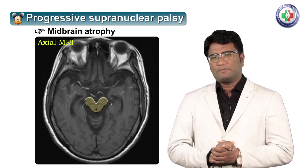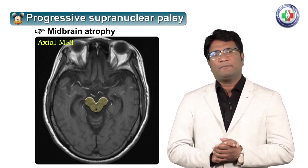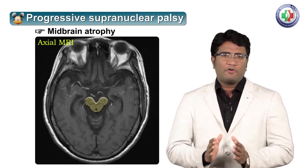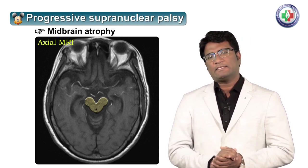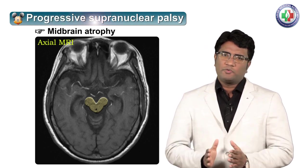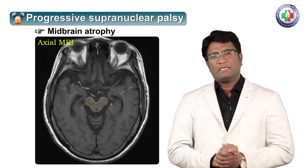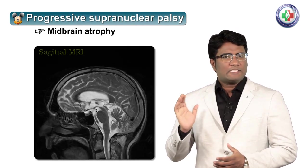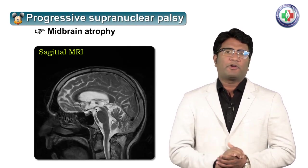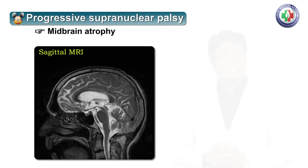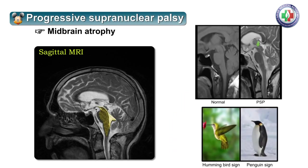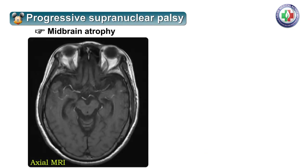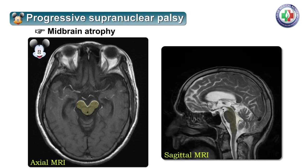Mickey Mouse appearance on axial MRI brain suggests atrophic midbrain seen in cases of progressive supranuclear palsy. The same atrophic midbrain on a sagittal MRI in a case of progressive supranuclear palsy gives the shape of a hummingbird or a penguin sign. So, progressive supranuclear palsy on axial MRI gives Mickey Mouse appearance, and on sagittal MRI gives a hummingbird or penguin sign.